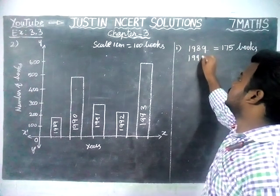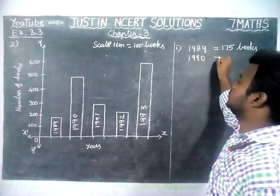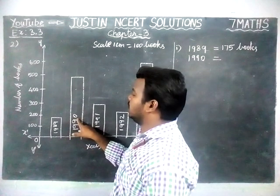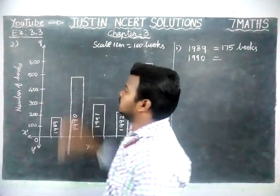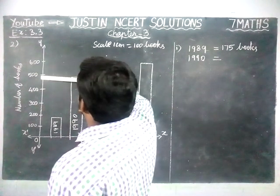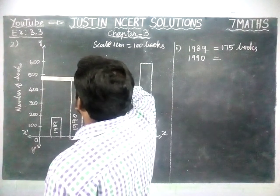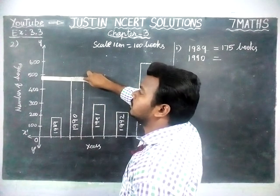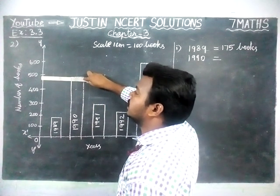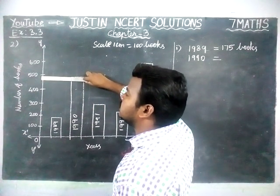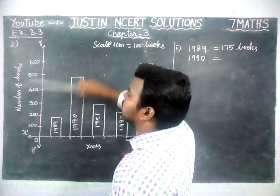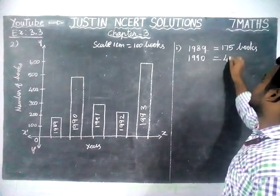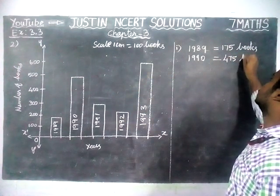Next, in the year 1990: we are going to check the bar value. The value is approximately 500, but we cannot say it exactly — it is nearby. So we are taking that as 475 books were sold in the year 1990.